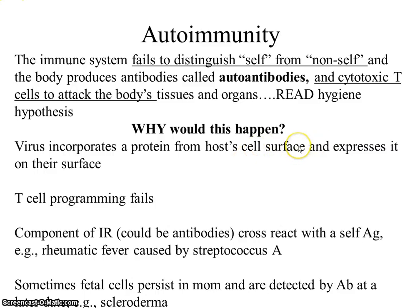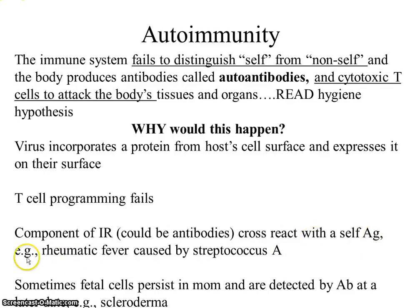If a T cell becomes activated against this virus, it may start seeing the self-protein as the problem. T cell failure can happen more with age as the thymus declines, which is why we see an increase in autoimmunity with aging. Another cause is antibodies that cross-react with a self-antigen - this happens in some bacteria. The antigen on Streptococcus A is very similar to antigens on our own cells, especially heart and valvular cells, which is why you often see valve problems with rheumatic fever.